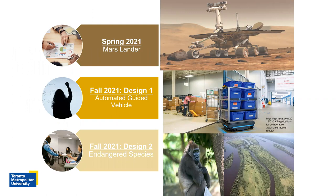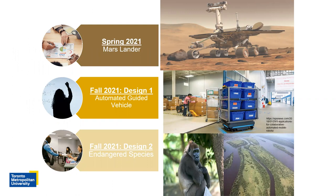We have three big design projects. One is a Mars Lander design project. We also developed an engineering design project focusing on automated guided vehicles. And a third involves a remote island with an endangered species — students must deliver food or resources to the island with minimal environmental impact, developing a mechanism to deliver said items.